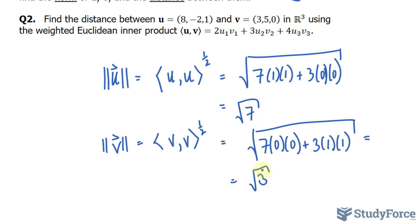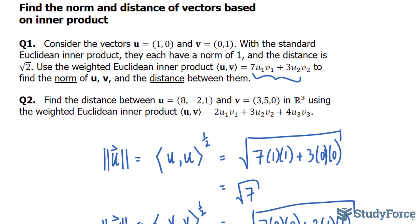I'll erase this extra equal sign. So, they wanted the norms of u and v, and also the distance between these two vectors. To find the distance between these two vectors, we'll use the expression u minus v in double absolutes.